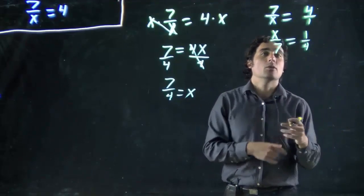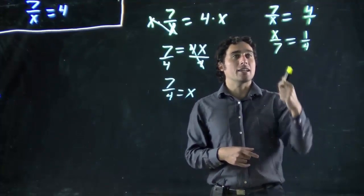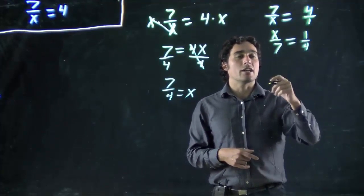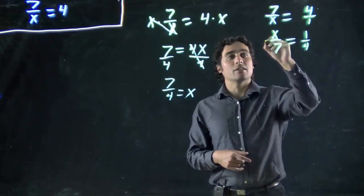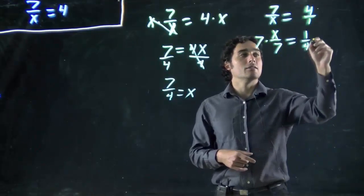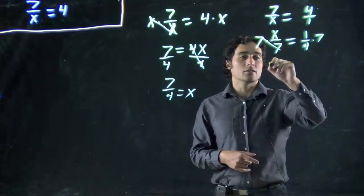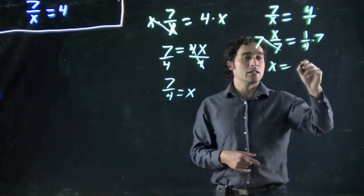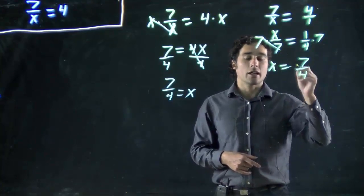Remember, I did it to both sides, so I'm okay. Now I need x on its own. Well, right now we're dividing by 7, so I can multiply by 7. Multiply by 7. Cancels, and we get x equals 7 over 4.